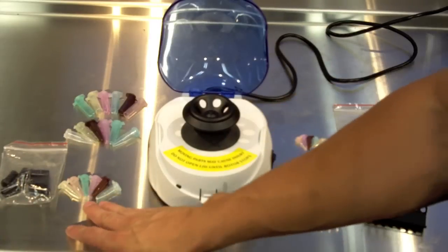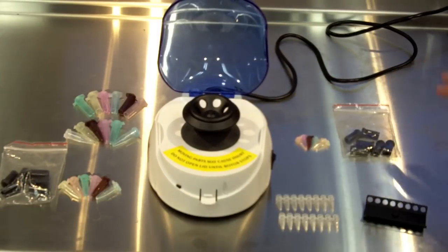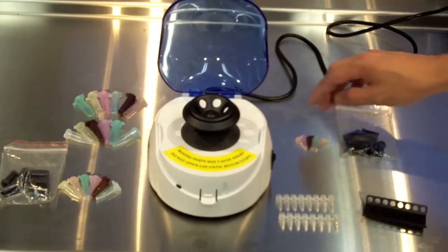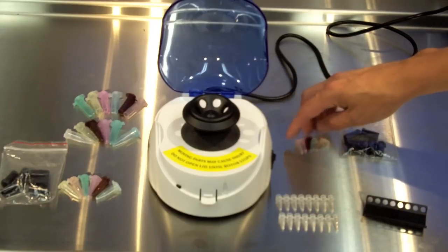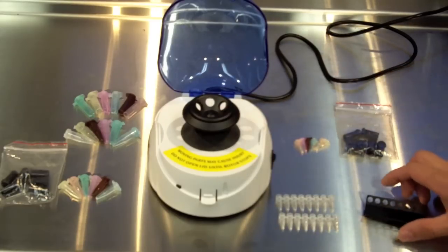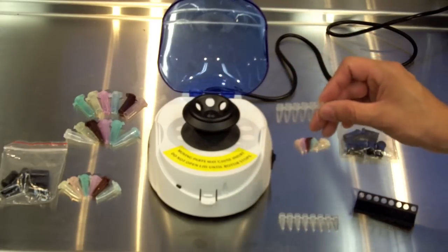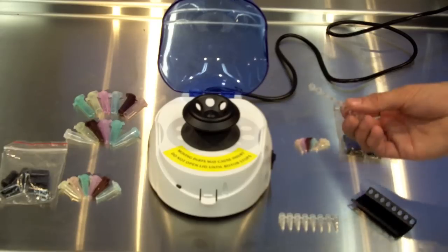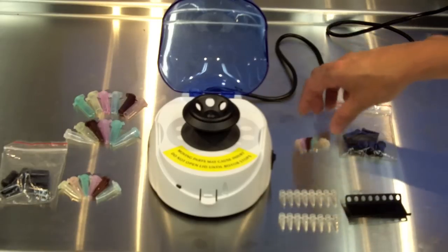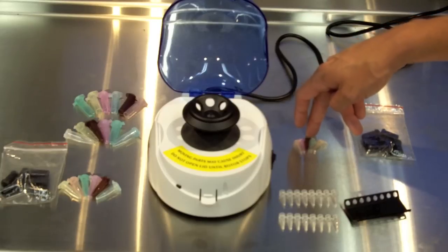You also get adapters to adapt the 0.5 mil microfuge tubes, and you get adapters to run 0.2 mil PCR tubes in the standard rotor. You can also replace the rotor with the rotor for the PCR strips. And in this rotor, you can run the PCR strips or 16 of the PCR tubes.